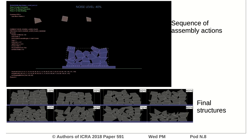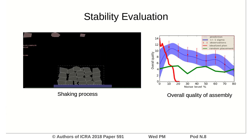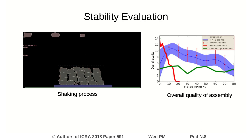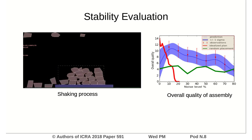We evaluate the stacking plan with object datasets of different irregularities. Built structures are shown on the bottom. The stability of the built structure is evaluated by shaking. The red plot shows the overall stability on the y-axis, and the x-axis represents the increasing irregularity of objects. It shows the proposed assembly planning can build strong structures using object datasets with large irregularities. If you would like to know more, please come over to our poster.